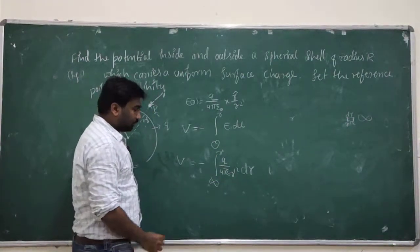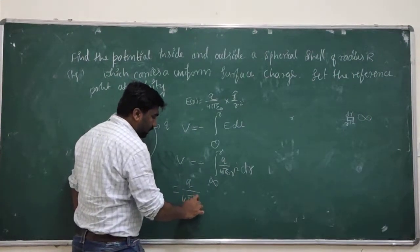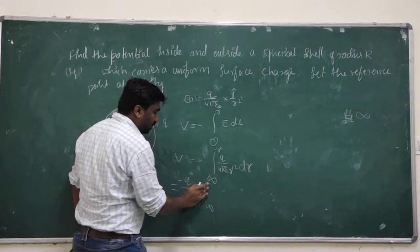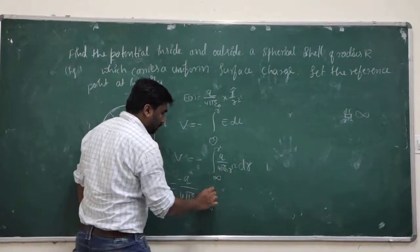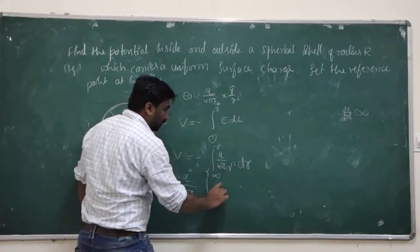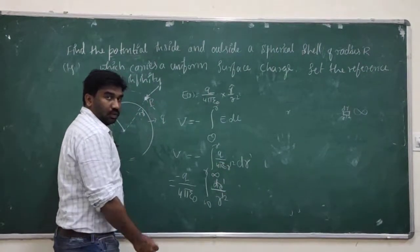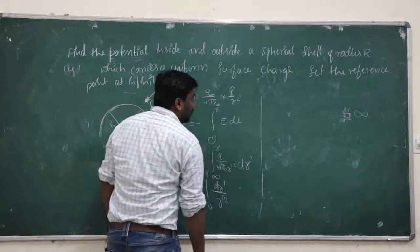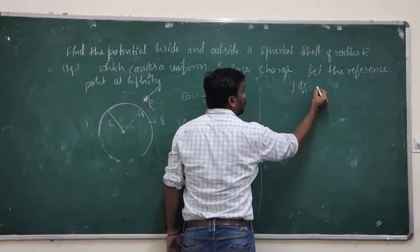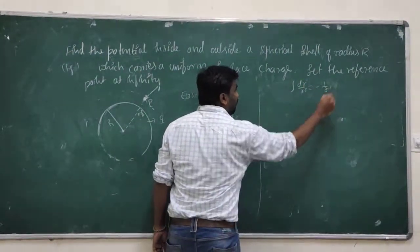Now let us integrate: q and 4 pi epsilon r are constants, take them outside. Minus sign, integration from infinity to given r of dr-dash divided by r-dash squared. We know that the integration of dr over r-squared equals minus 1 over r, so here with r-dash squared we get minus 1 over r-dash.